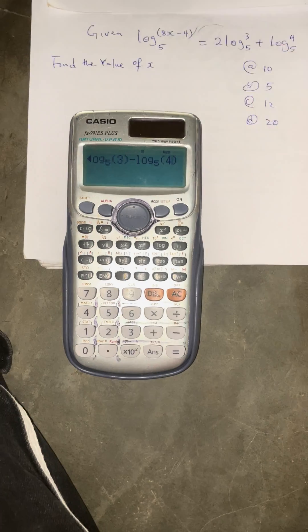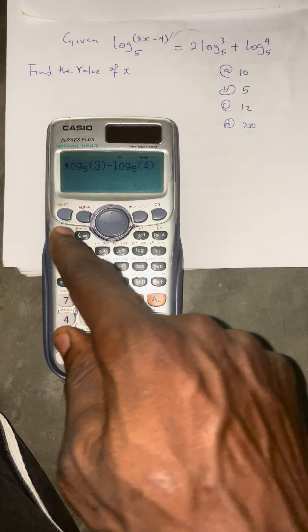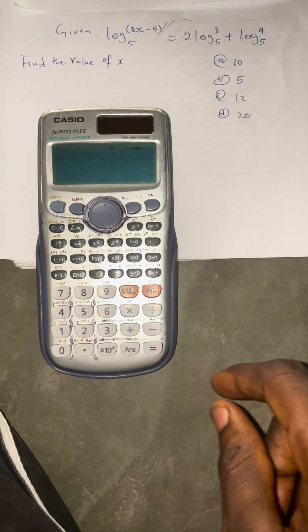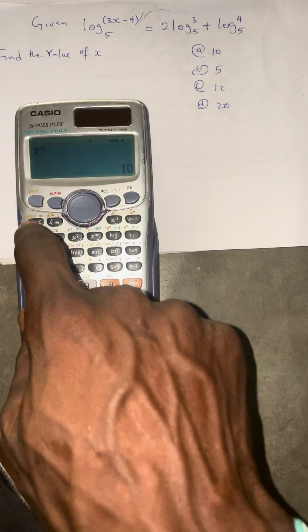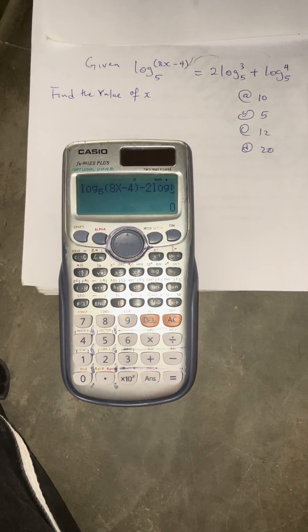Don't forget that we've taken everything inside, so we now test this option. The one that gives us zero is the answer. So press calculate for option A, we have 10, then press equals. It is not equal to zero. Press calculate option B, press five and press equals. It is equal to zero, so that's the final answer.